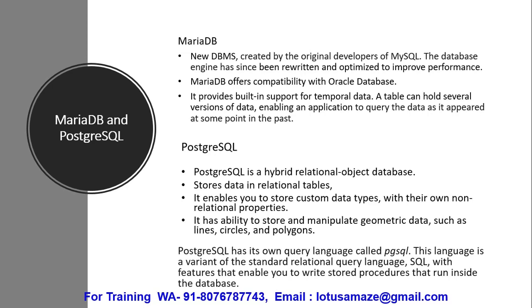PostgreSQL is a hybrid relational-object database and the most popular open source object-relational database. It is known for reliability, robustness, and performance. It stores relational data but also provides different customized data types with their own non-relational properties. It has the ability to store and manipulate geometric data like lines, circles, and polygons. It offers a query language called PL/pgSQL — a variant of the standard relational query language with features that enable you to write stored procedures that run within the database.